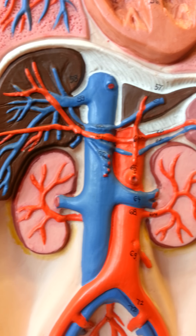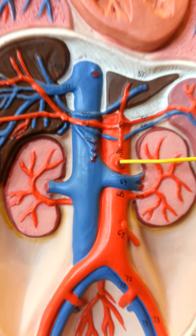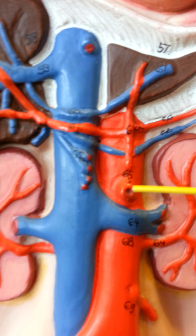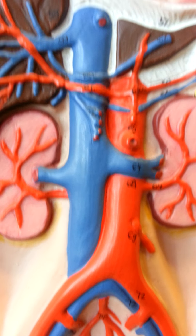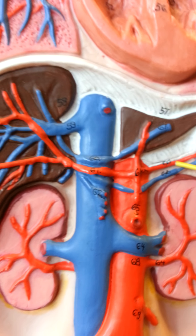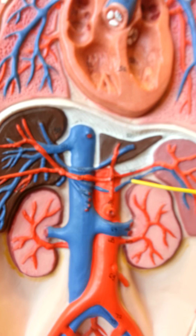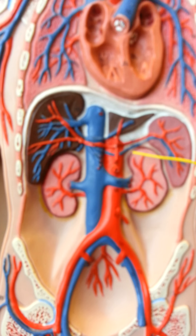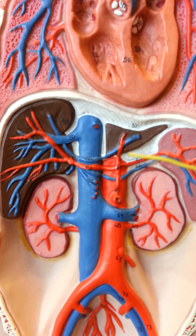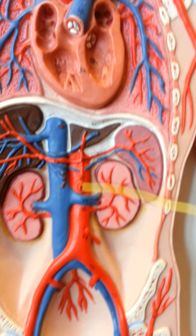The superior mesenteric artery. And then the splenic artery, which is up there. The abdominal descending aorta. So once it passes the diaphragm, it's the whole trunk, like this whole thing.